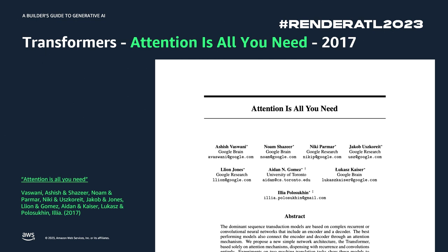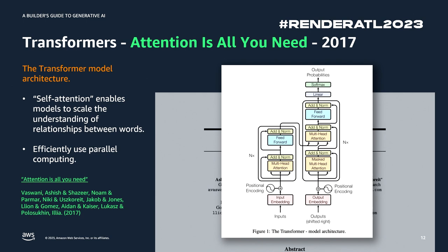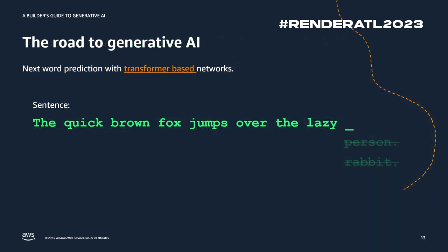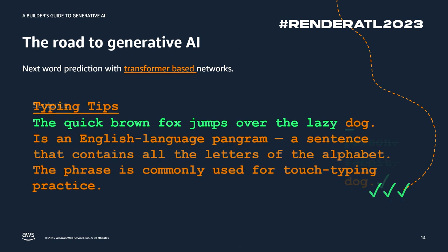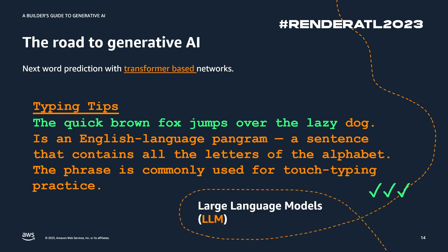A new method called Transformers came out around 2017. This was really the jump-starting of how we got to generative AI as we know it today. It had a mechanism called self-attention, and a model was able to take context from an entire sentence. So a model can predict the next word based on things that happened much farther back — not just what's locally close to the word. So with 'the quick brown frog jumped over the lazy dog,' a model can go on and generate the next set of text. This is where we have what we call large language models.